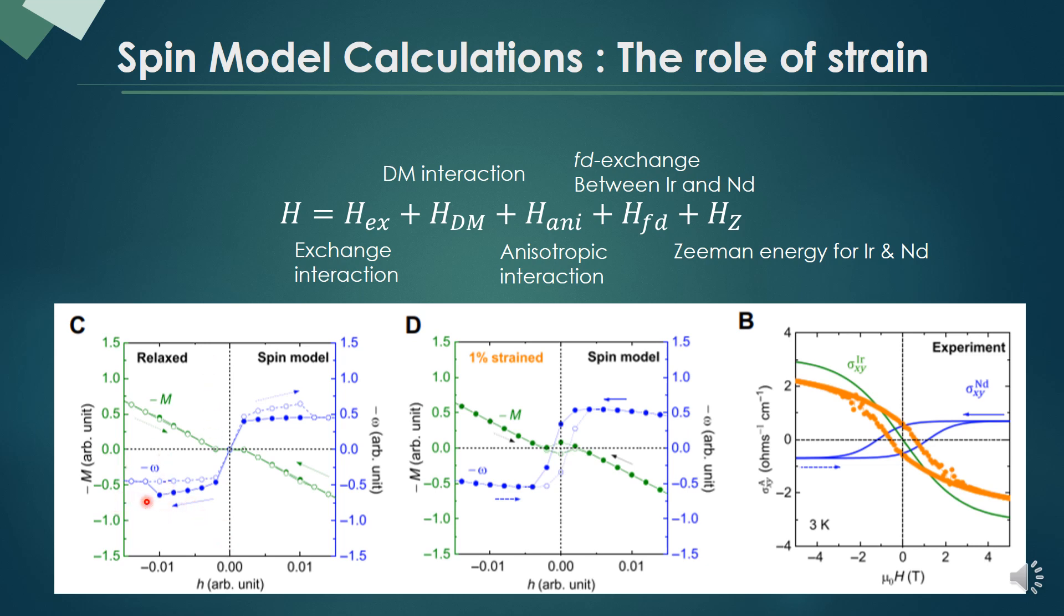When relaxed film, there is no T1 octupole at zero field. On the other hand, in 1% strained film, T1 octupole is finite.